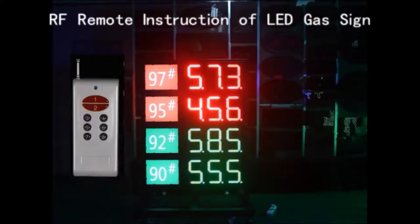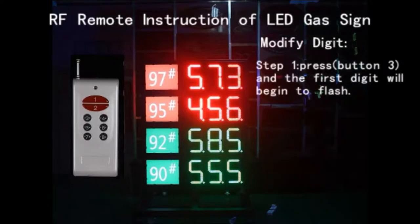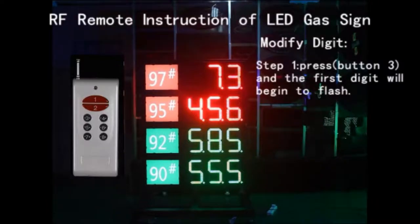RF Remote Instruction of LED Gas Sign. Modify Digit, Step 1. Under the display working, press button 3. Then the first digit will begin to flash.